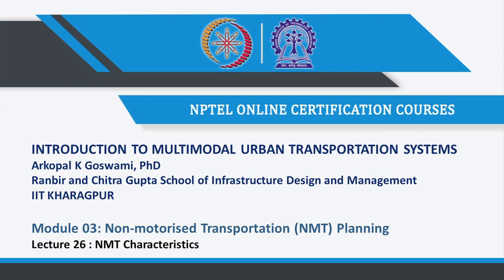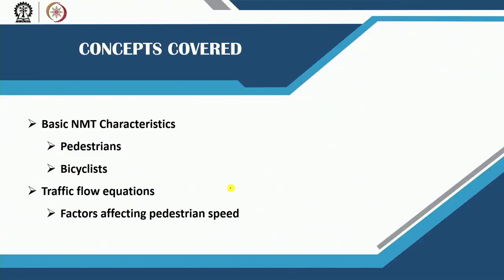Welcome back friends. Let us begin our next module on non-motorized transportation. We have looked at the 5 basic steps of planning for non-motorized transportation. Now we will get into the details of bicycles and pedestrians one by one. In this lecture, we will look at the characteristics of pedestrians and bicycles, and get into the traffic flow equations and the factors that affect pedestrian speed.